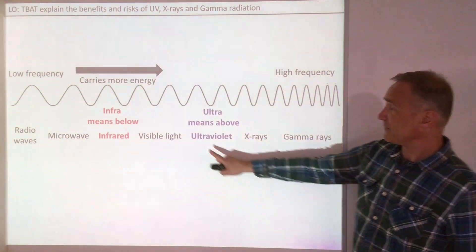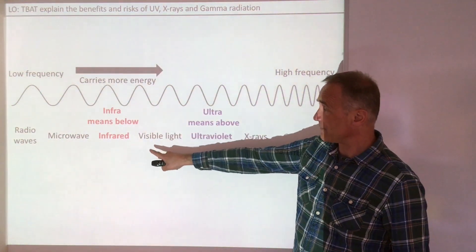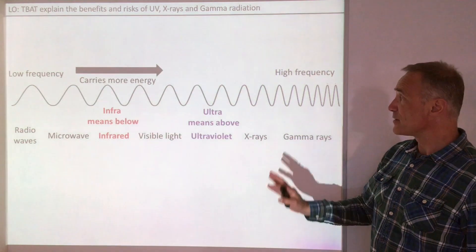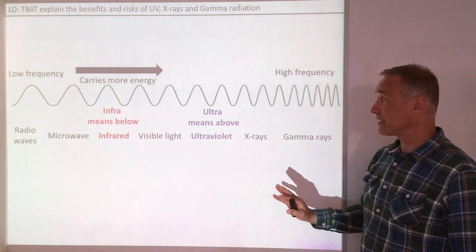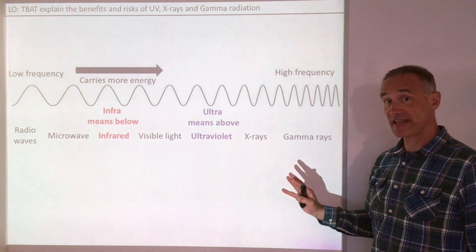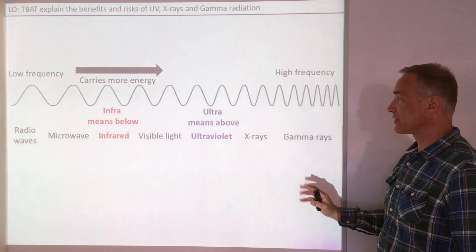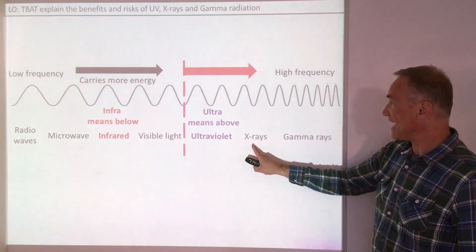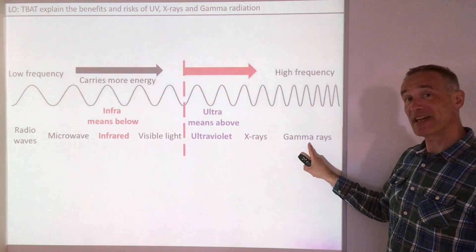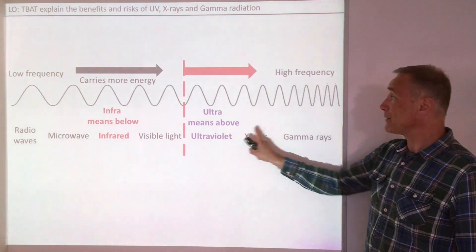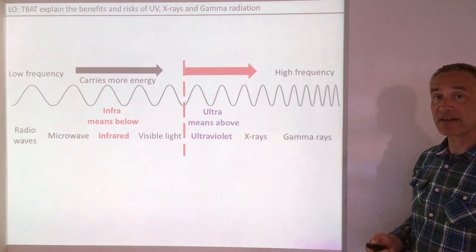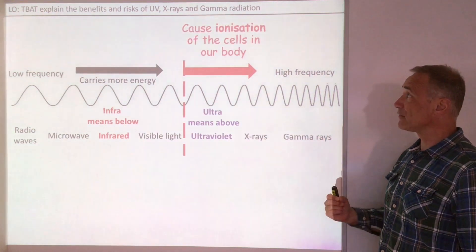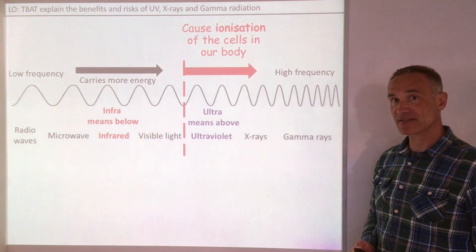Last time we looked at visible, infrared, microwave and radio waves. None of those have enough energy to ionize atoms and cells. But as you go on to ultraviolet, x-rays and gamma rays, they're carrying more energy because they have a high frequency, and so they can ionize cells which increases your risk of cancer.